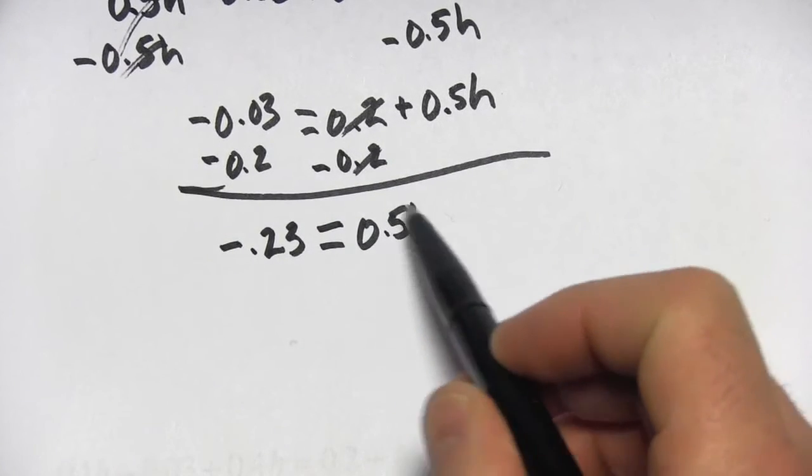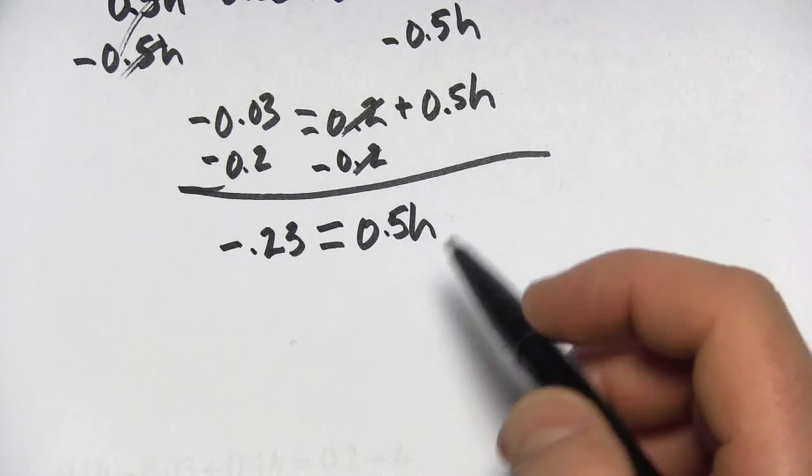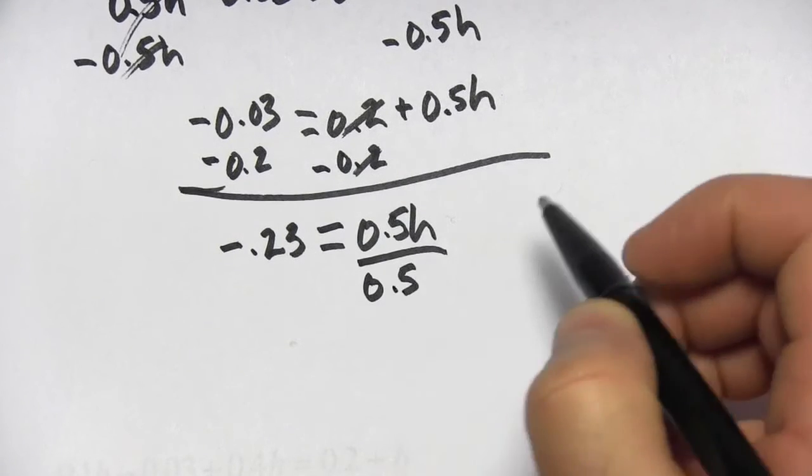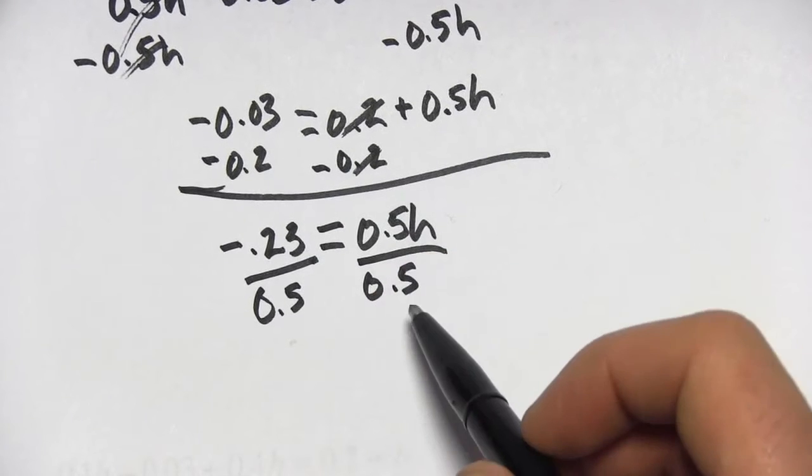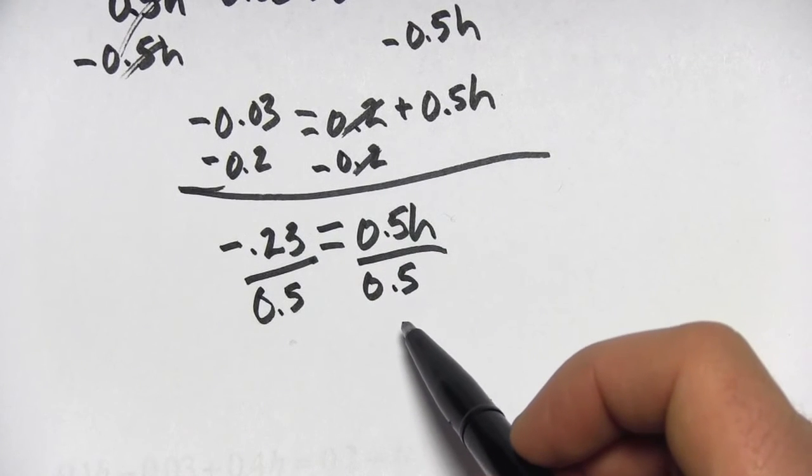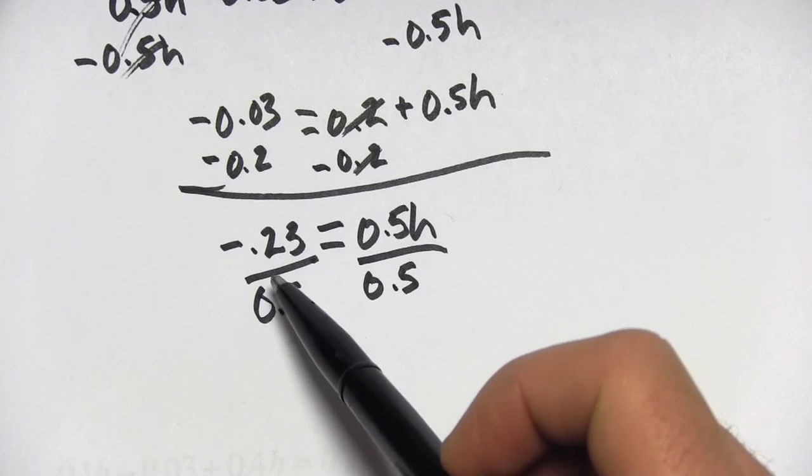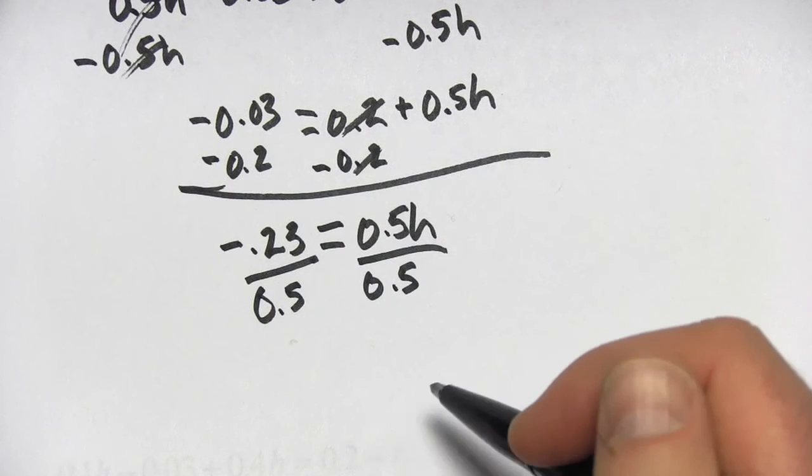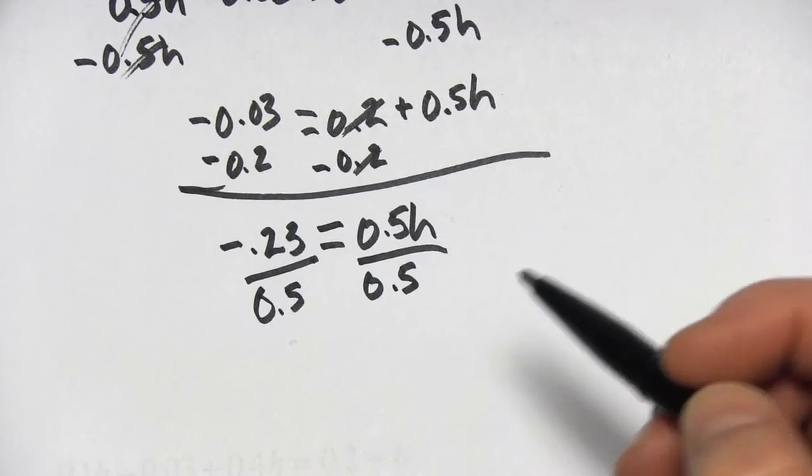Now our last step is to undo this multiplication. h is being multiplied by 0.5. So we actually need to divide by 0.5. And sometimes this seems a little bit weird. When you divide by a fraction, a number that's between 0 and 1, it's actually going to make this bigger. So this 0.23 is actually going to get bigger. Sometimes that's confusing, why would division make something bigger? But if you divide by a decimal between 0 and 1, that's going to happen.